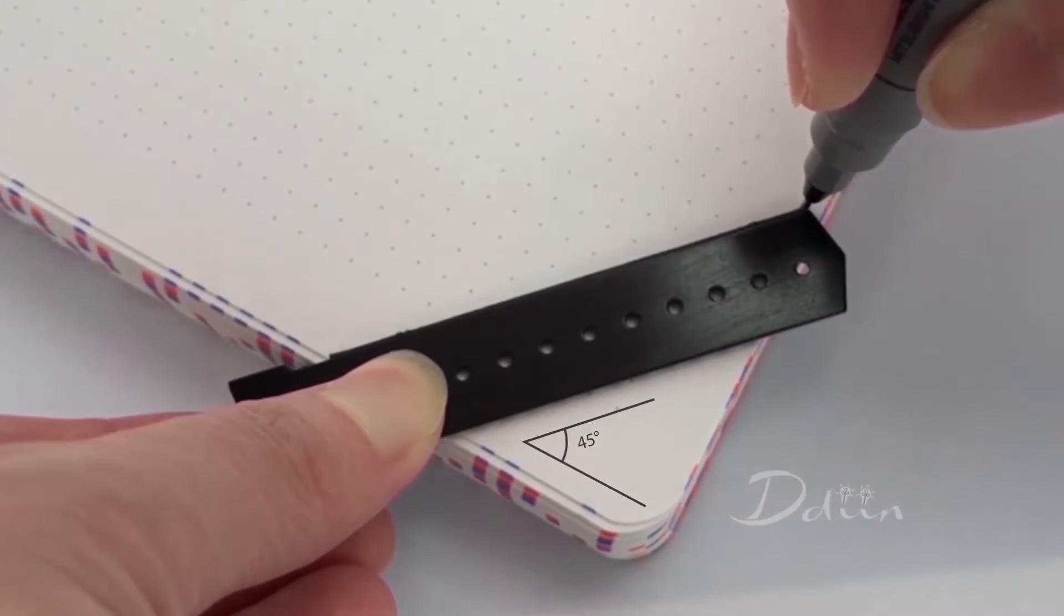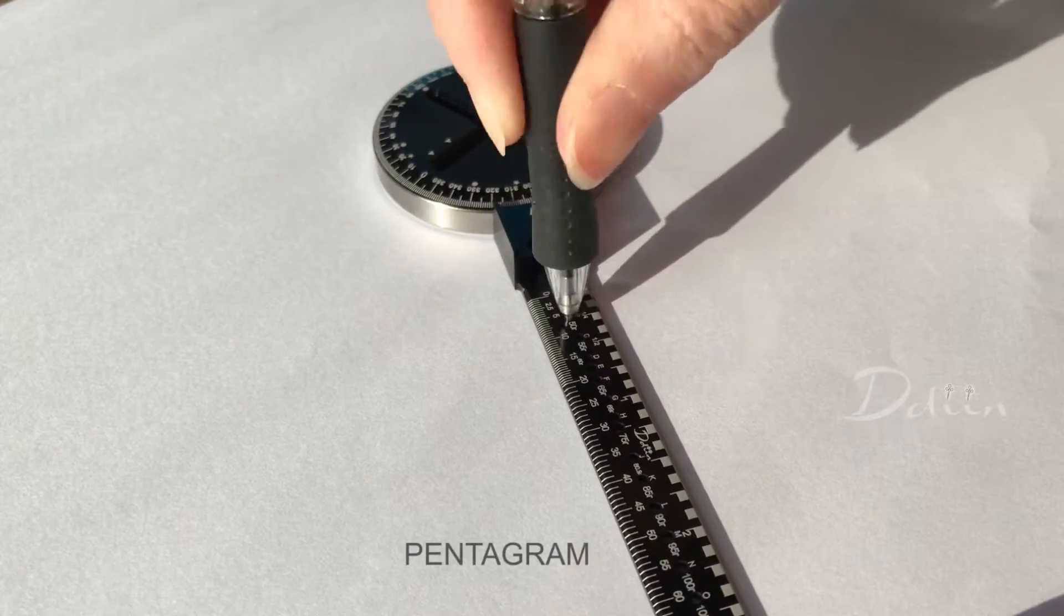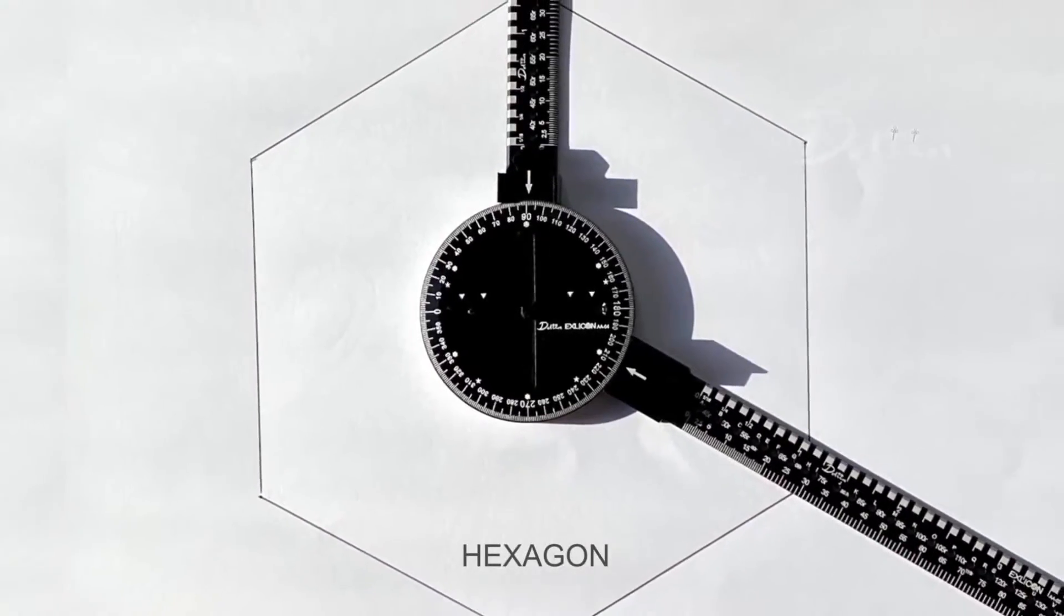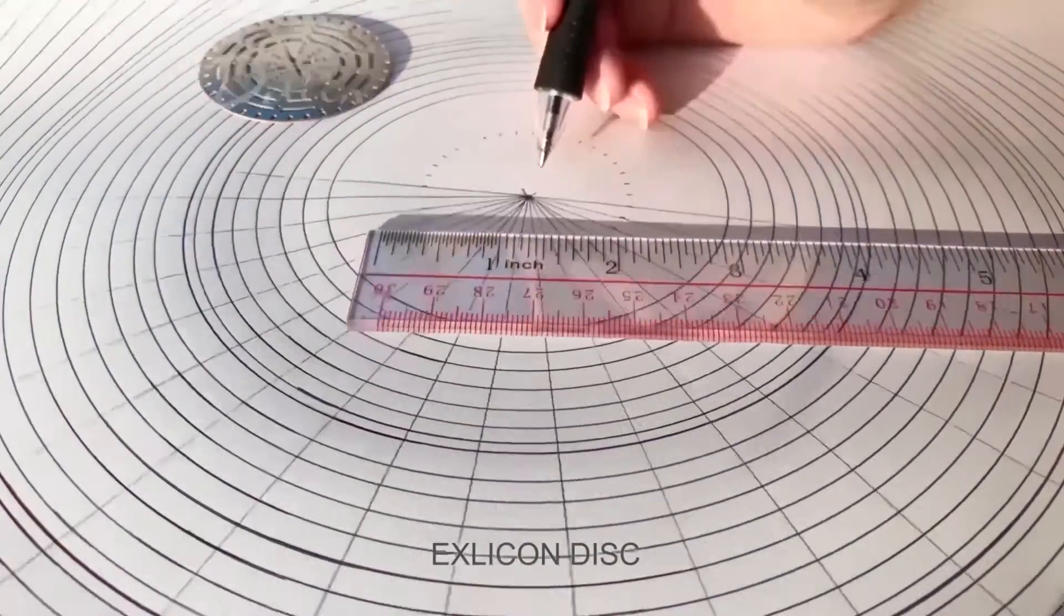Create 45 degree angles with the anchor and short wing. Draw a perfect pentagon and hexagons in seconds. Use the disc to make grid drawings even simpler.